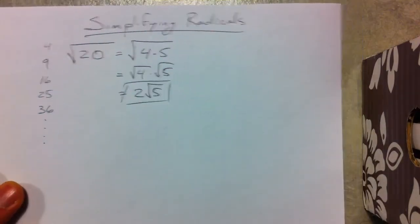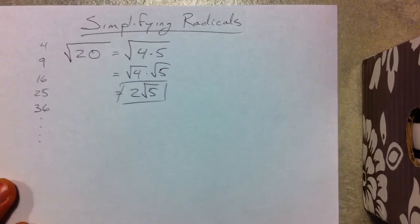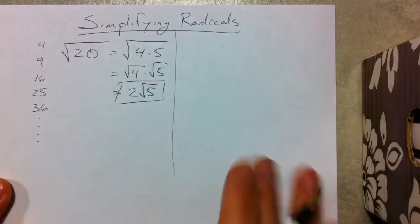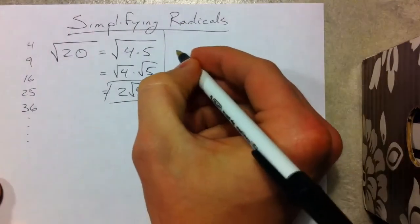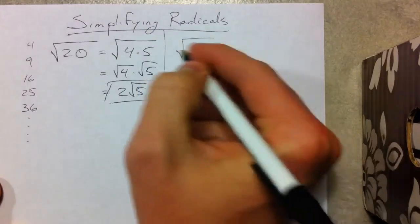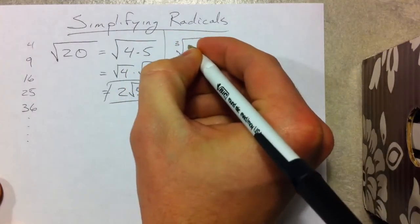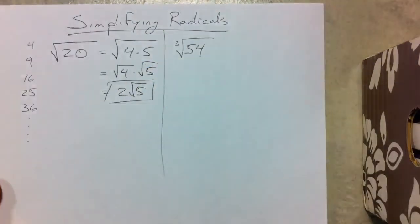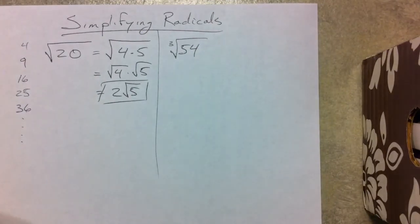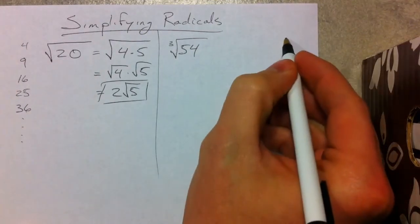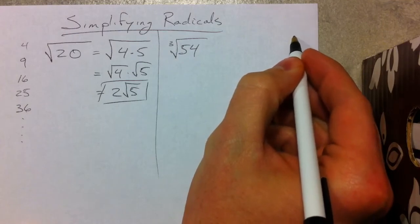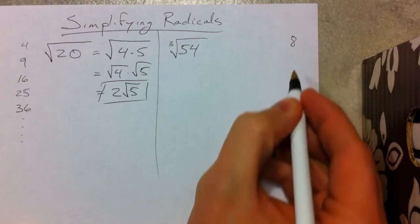Now we're going to compare that, but we're going to be doing it with cubed roots — the cubed root of 54. With cubed roots, you're going to have to look for the perfect cubes. The perfect cubes: 2 cubed is 2 times 2 times 2, which is 8.